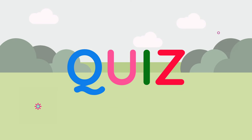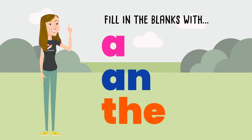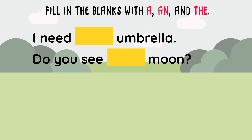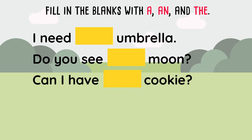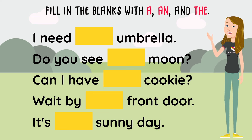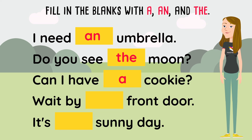It's time for a mini quiz. I'll show you a few sentences and I want you to fill in the blanks with a, an, or the. Ready? I need blank umbrella. Do you see blank moon? Can I have blank cookie? Wait by blank front door. It's blank sunny day. Time's up — here are the answers. I need an umbrella. Do you see the moon?